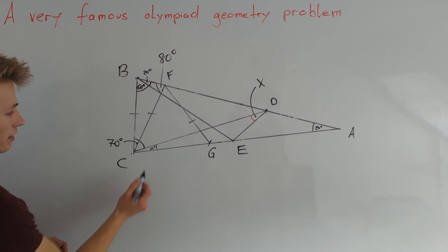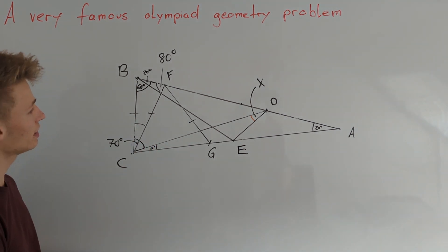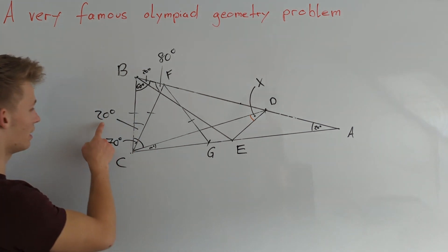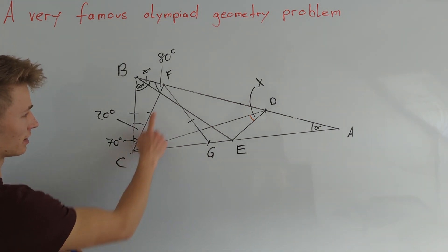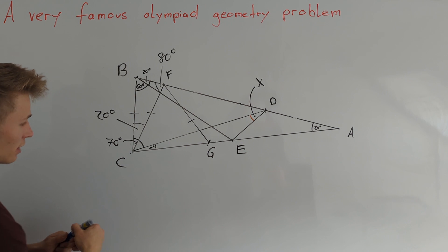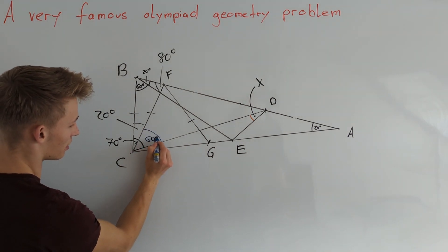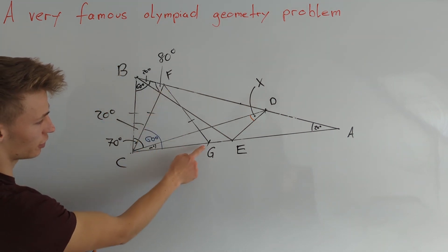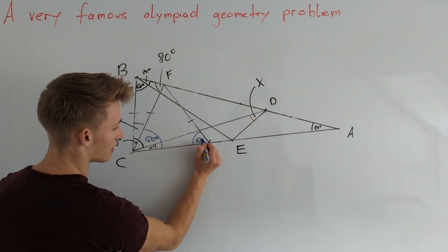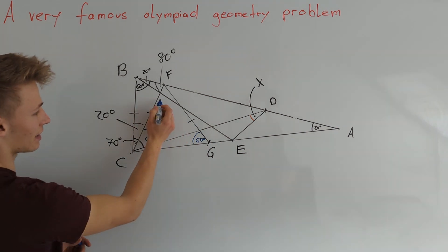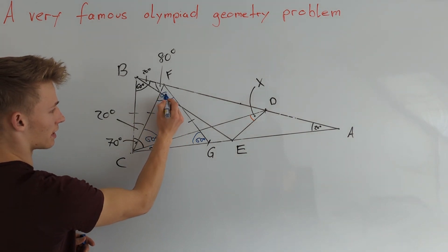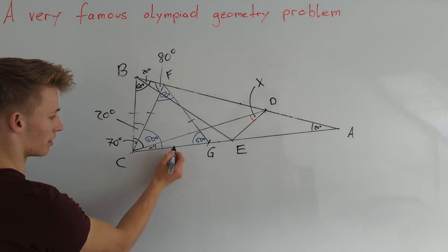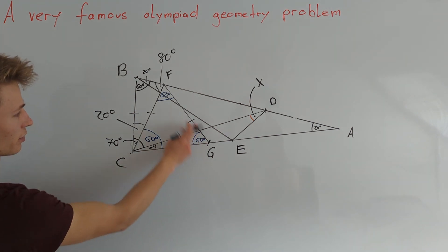From this we get that this angle here must be 180 degrees minus 80 minus 80, so this angle is equal to 20 degrees. From this 20 degree angle we can calculate the angle GCF, which is 80 degrees minus 20, so we get that this angle is 60 degrees. Since we constructed point G such that CF is equal to FG, this angle is also 60 degrees, and therefore the last angle in this triangle is also 60 degrees. This means that triangle CFG is equilateral, so side CG is also equal to all the other sides.